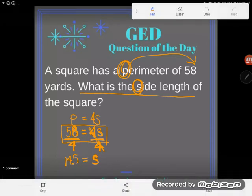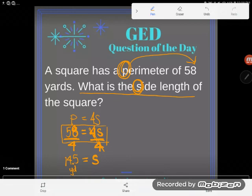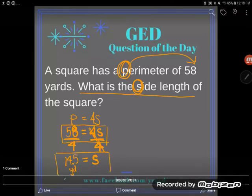And so I see I have a side length of 14.5. And 14.5 what? Well this is a dimension. Dimensions are always measured in regular linear measurements, so plain old yards or plain old inches or plain old meters. And so my side length is 14.5 yards.